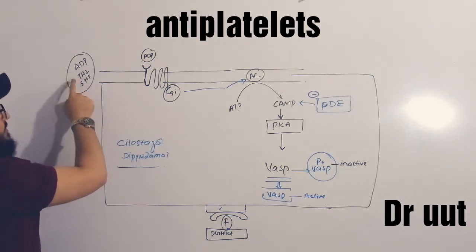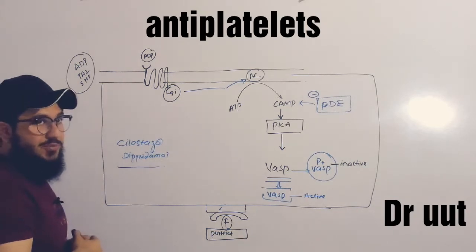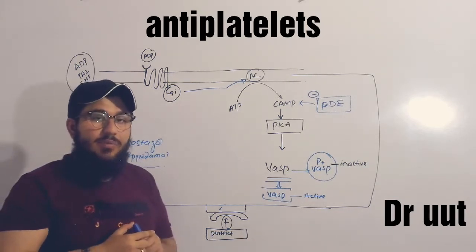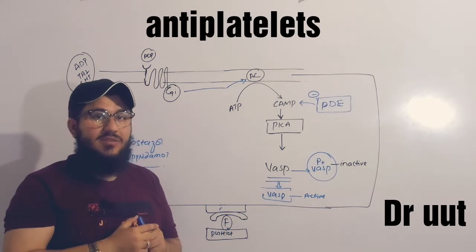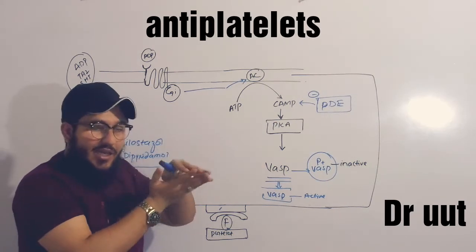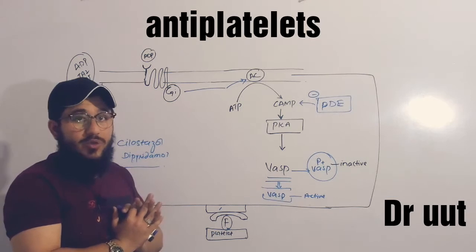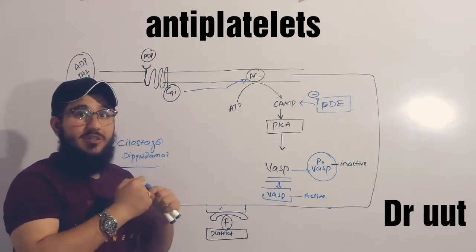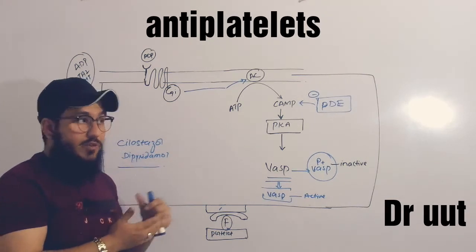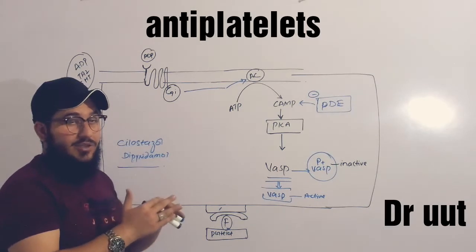ADP, thromboxane A2, and 5-hydroxytryptamine are called platelet aggregating factors — they help in the aggregation of platelets. We don't need platelet aggregation inside the blood vessel, so we give these medications in order to inhibit platelet aggregation.